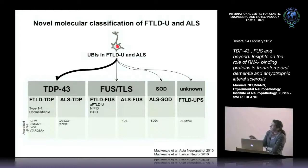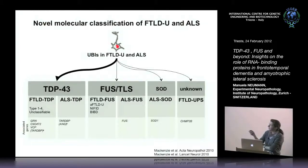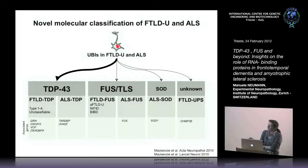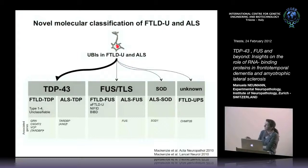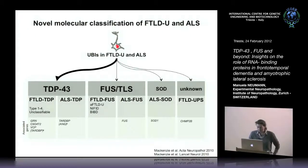Going back to the ubiquitinated inclusions in FTLDU and ALS: it was known for several years that SOD1 plays a role in a small subset of ALS cases. In 2006, TDP-43 was identified as the disease protein in the vast majority of FTD and ALS patients. About 10 percent of these diseases remained, and in 2009 the protein FUS was also identified in FTD and ALS patients.